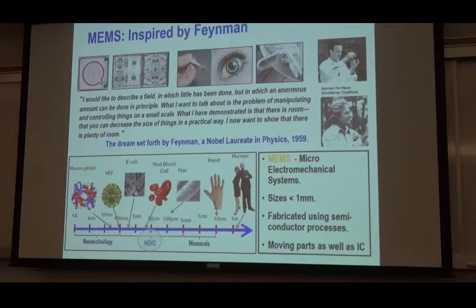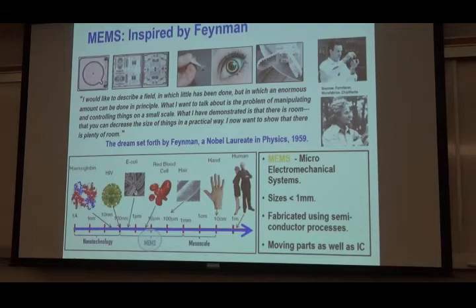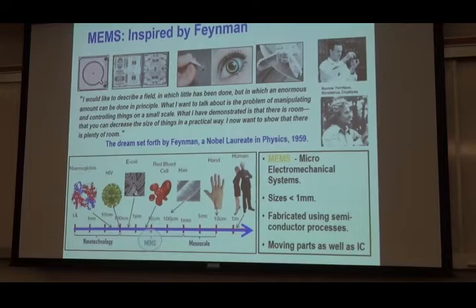In 1959, there were no MEMS devices, no micro-devices, no accelerometers, no gyros, not even flash memory. If you wanted to record your professor at that time, you needed a crew of five people. During that time, Feynman gave a talk to the Society of Physics as keynote speaker. He said: 'I would like to describe a field in which little has been done, but in which an enormous amount can be done in principle. What I want to talk about is the problem of manipulating and controlling things on a small scale.'